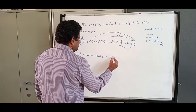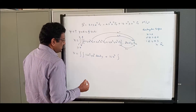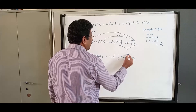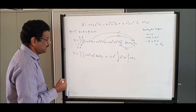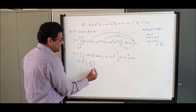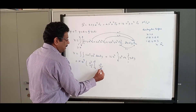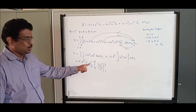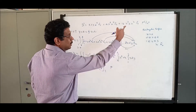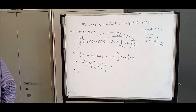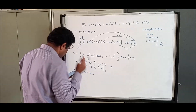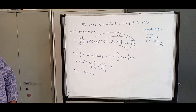Substituting the limits: 16z³ · [x³/3 from 0 to 2] · [y²/2 from 1 to 3]. At z = 2, z³ = 8. The x integral gives 8/3, and the y integral gives (9 - 1)/2 = 4. Multiplying: 16 × 8 × (8/3) × 4. Don't forget the pico units. The final answer is 1.365 nano-coulombs. Please try to work through it yourself to verify this answer.